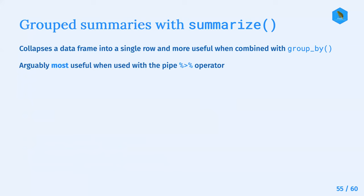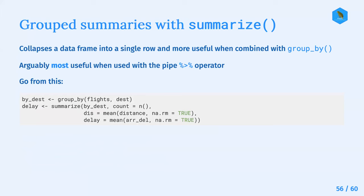As I've been going through these slides, I've already used the pipe operator. In this example without pipes, we assign 'by_dest' to group_by(flights, dest), grouping the flights dataset by destination. Then we summarize by_dest, counting observations and creating additional variables using the mean function and assigning new variable names.